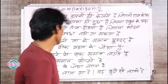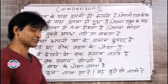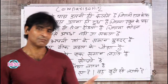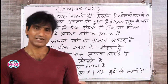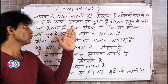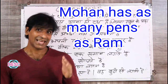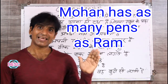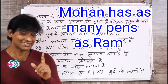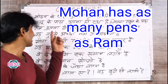Friends, 'Mohan is as tall as Ram' — this is a positive degree sentence. Aur iska doosra example: Mohan ke paas utni hi kalme hain jitni Ram ke paas, toh 'Mohan has as many pens as Ram.' Theek hai friends, 'Mohan has as many pens as Ram.'